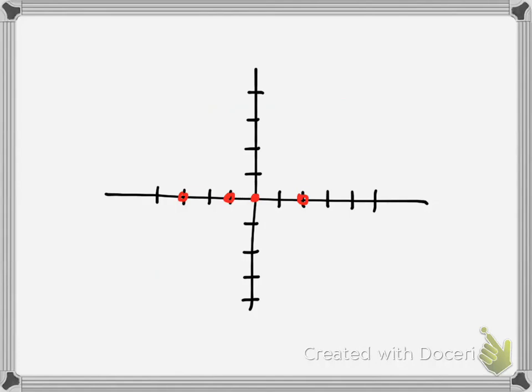And then we have the end behavior that the ends were going to point in opposite directions, but the graph was going to eventually rise. So sometimes I'll just sketch in the end behavior like this, and then I'll smooth it out and erase and adjust if necessary.